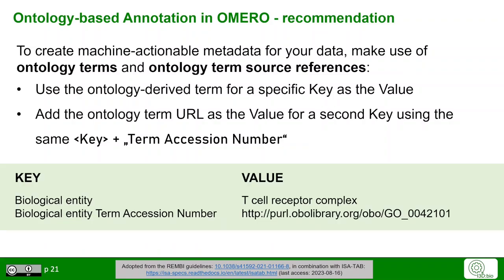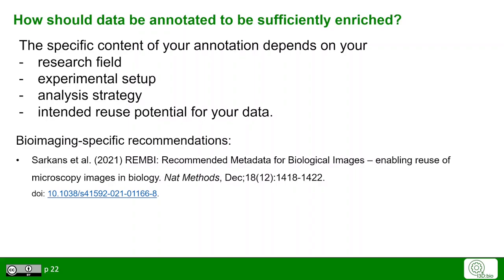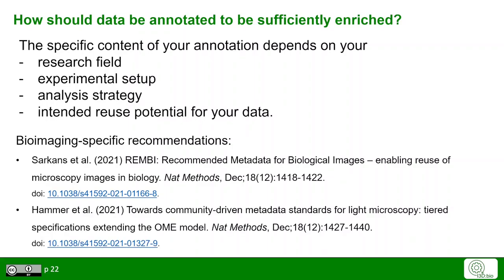For example, use the key-value pair with key "biological entity" and value "T-cell receptor complex", then add a second key-value pair with key "biological entity term accession number" and the URL resolving to that ontology term. How you annotate data depends on your research field, experimental setup, analysis strategy, and intended reuse potential. There are recommendations for bioimaging-specific metadata such as the REMBI guidelines (Recommended Metadata for Biological Images), and more tailored guidelines for specific sub-communities. Review the i3dbio website at i3dbio.de for more recommendations.